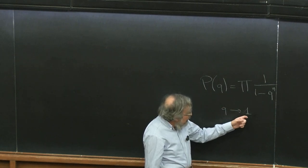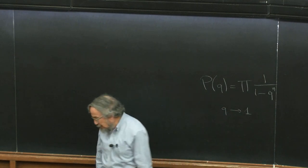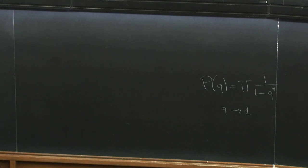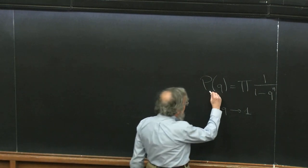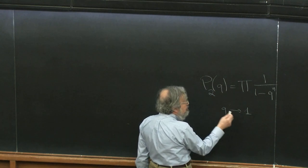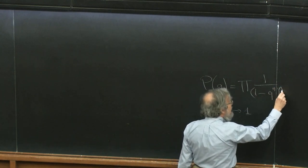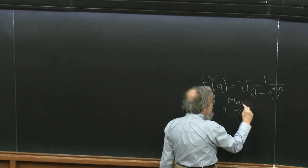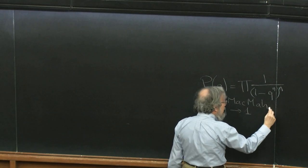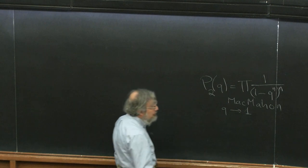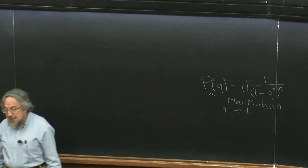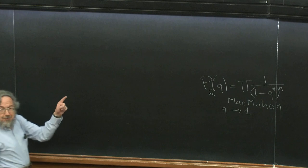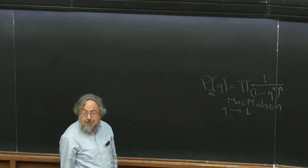And also when q goes to minus one, or a root of unity, using the Schifter-Roy-Limic-Maclaurin — and that will have an application. But I kind of carried out that briefly. The exercise was to do the same for what's called the MacMahon function, which is known to be the generating function for plane partitions.